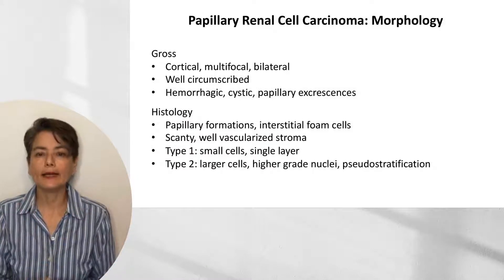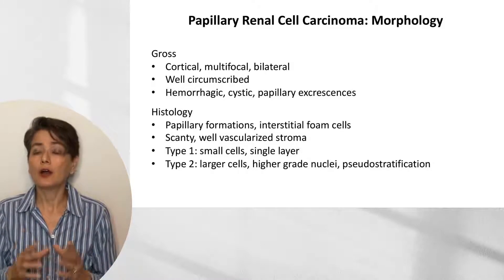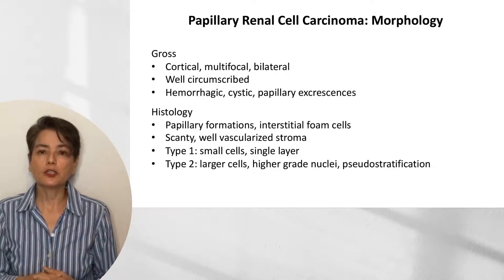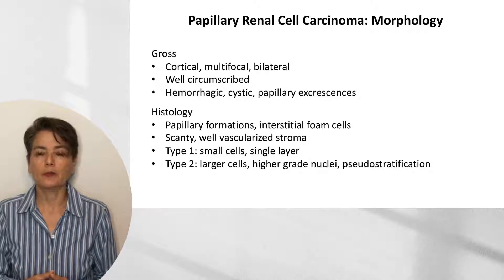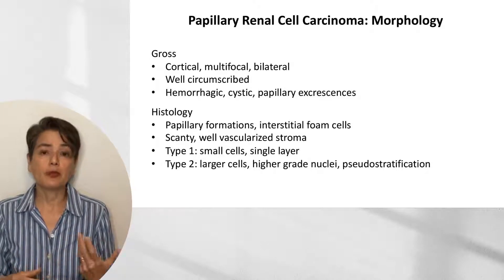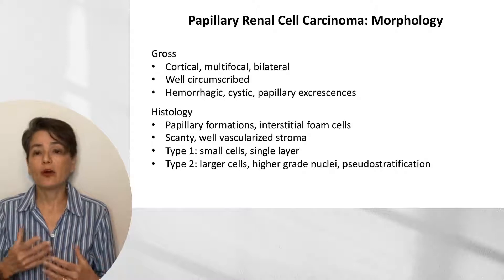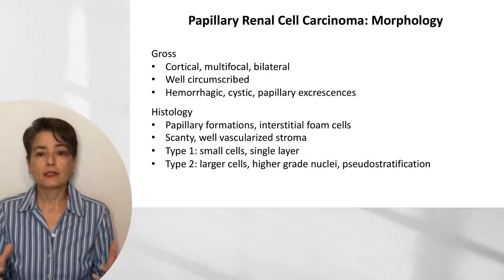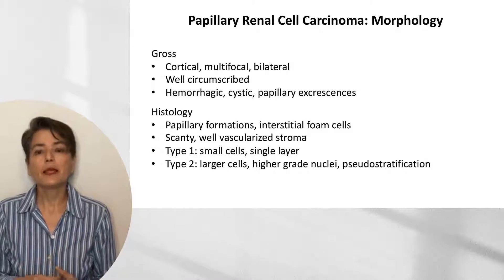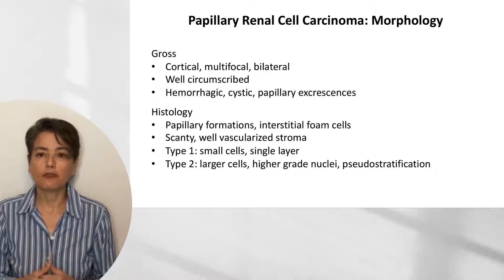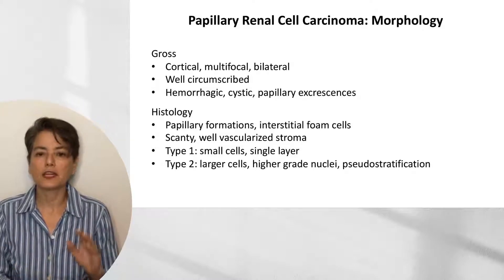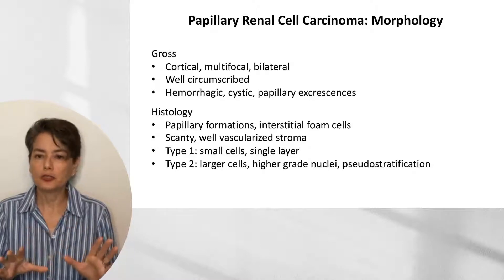Grossly, papillary renal cell carcinomas are unusual in that they tend to be multifocal and bilateral. Like clear cell tumors, they are cortical and tend to be well circumscribed. Appearance can be very variable — hemorrhagic, cystic, and they may have a shaggy surface due to papillary excrescences. Histologically, we see papillae with characteristic interstitial foam cells and a scanty, well-vascularized stroma. Type 1 has small single-layer cells; type 2 has larger cells, higher-grade nuclei, and pseudostratification.